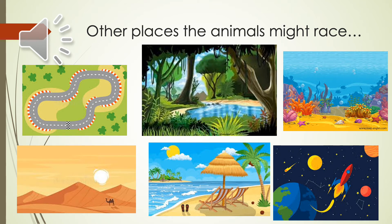Here are some places and pictures that I thought of where the animals could have raced. They might be racing down a race course, they might be racing across the jungle, they might be dashing around the pond and across and between the trees.